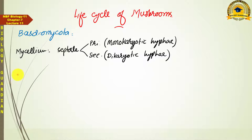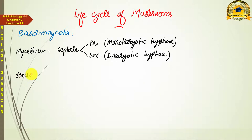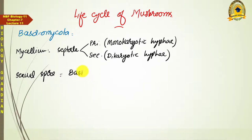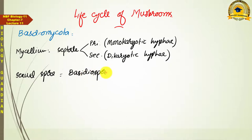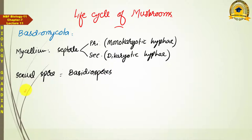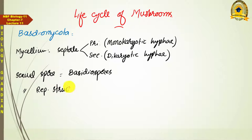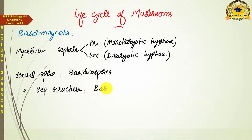The sexual spores in Basidiomycota are called basidiospores. These basidiospores are produced on the tip of the reproductive structure called basidium. The singular word is basidium and its plural is basidia.